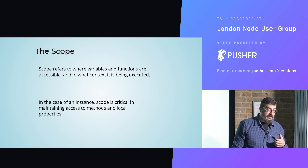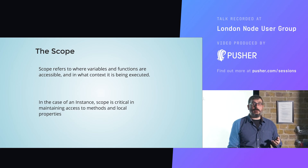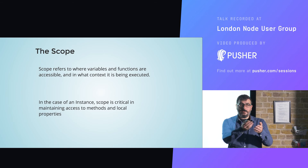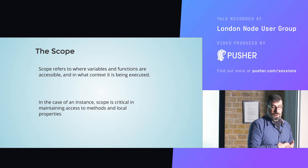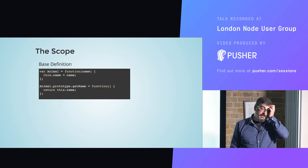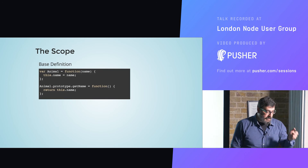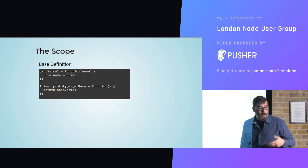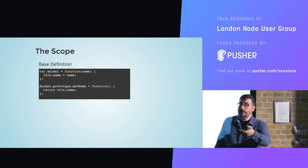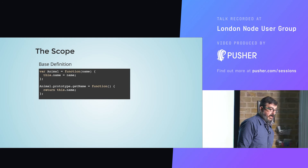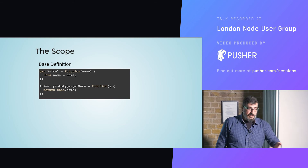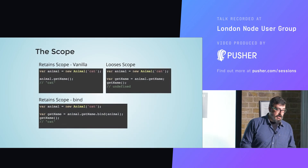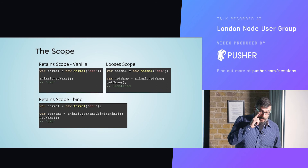In the case of an instance, scope is critical in maintaining access to methods and local properties. When we define a property like this.age = 20, in order to access that property we need to access it within the same scope. For example, the constructor has an argument — when we do new Animal we give it a name, so that animal has a name. We can get the name by invoking the method getName, which returns this.name.